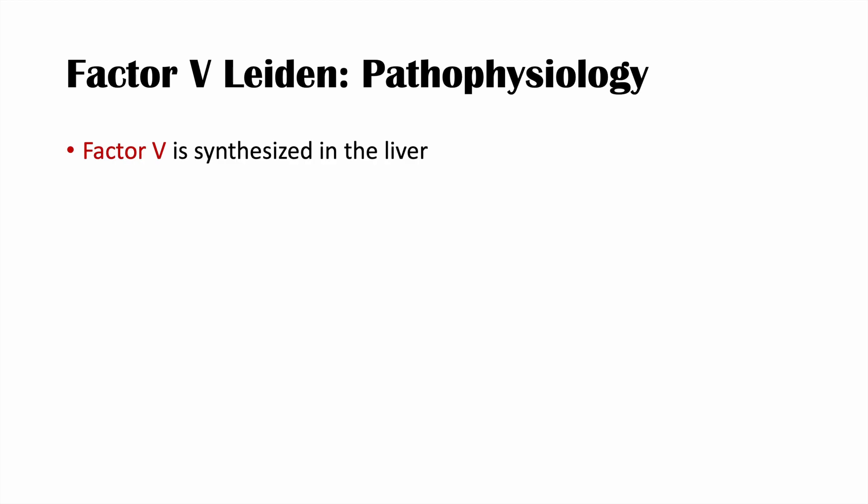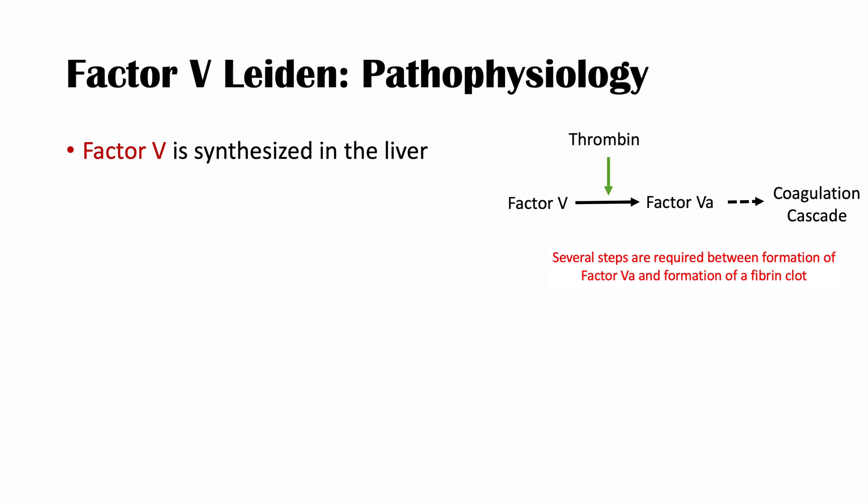What is the pathophysiology of this condition? Factor V is part of the coagulation cascade and is a coagulation factor synthesized in the liver. In the coagulation cascade, thrombin leads to the activation of Factor V to activated Factor V — Factor Va. Once activated Factor V is formed, it leads to completion of the coagulation cascade and formation of a fibrin clot.